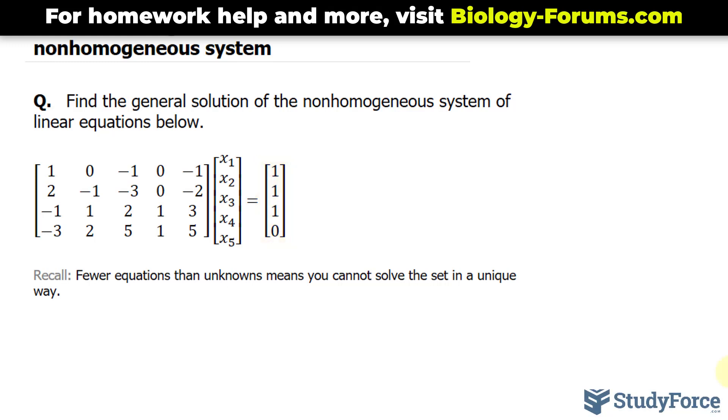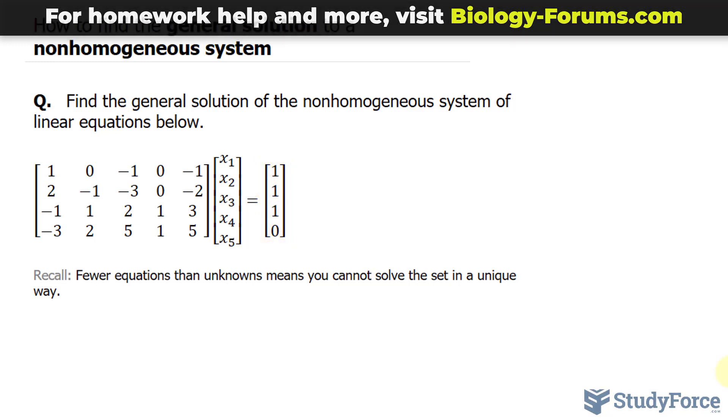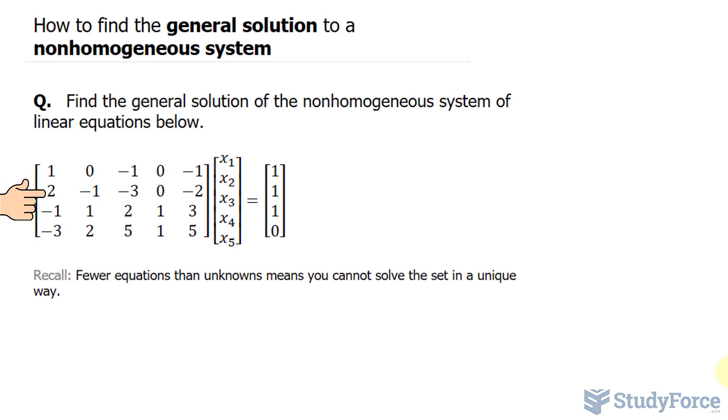Also keep in mind that when you have fewer equations, let's pretend that each of these rows represents an equation, than you do unknowns. Notice that we have four equations and five unknowns. That means you cannot solve the set in a unique way. And by that I mean you won't strictly get one solution for this system.